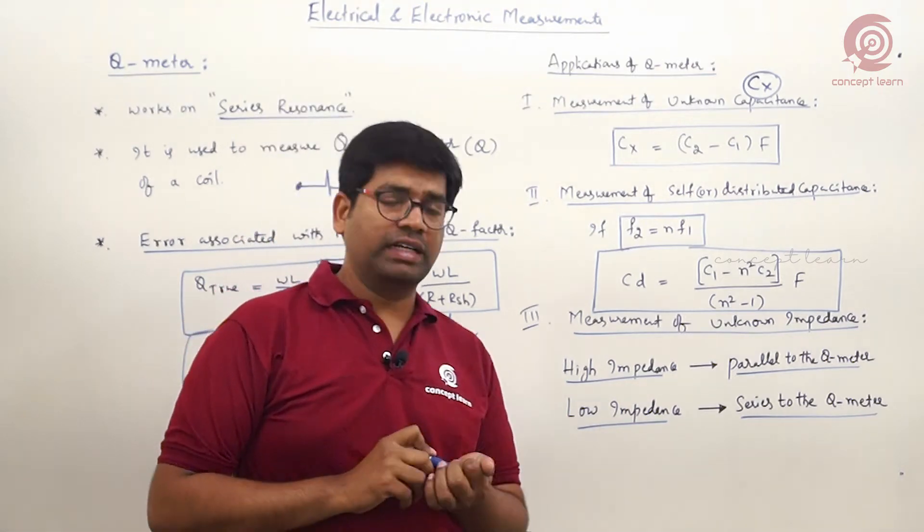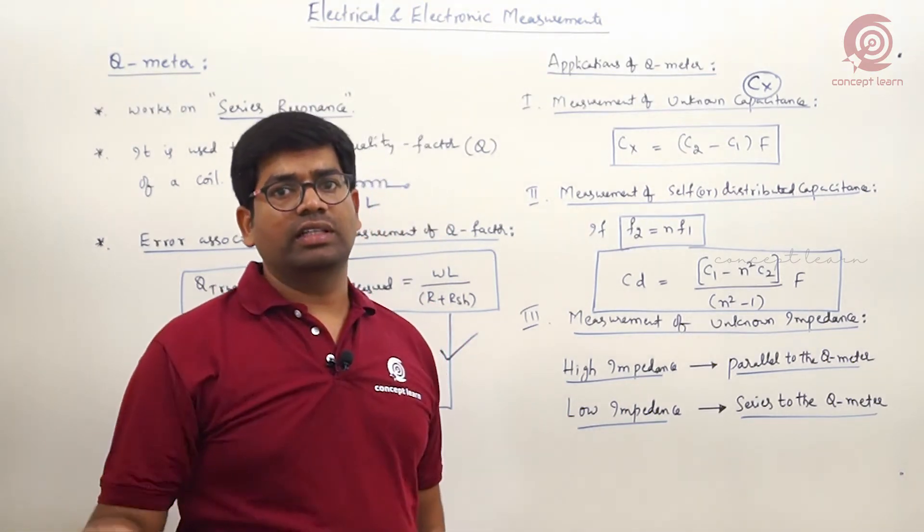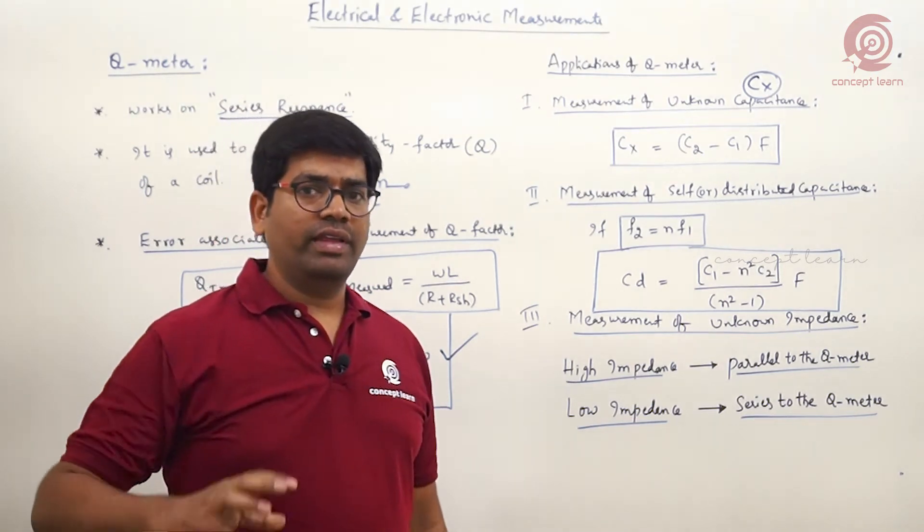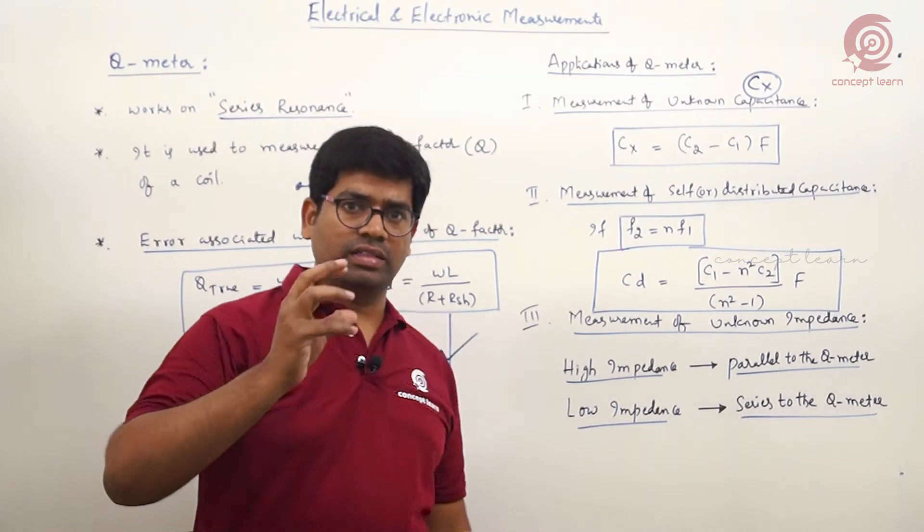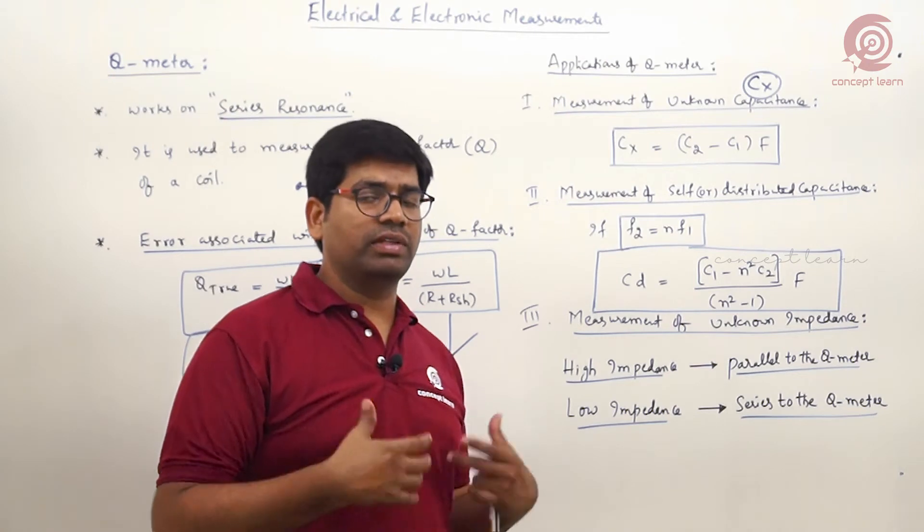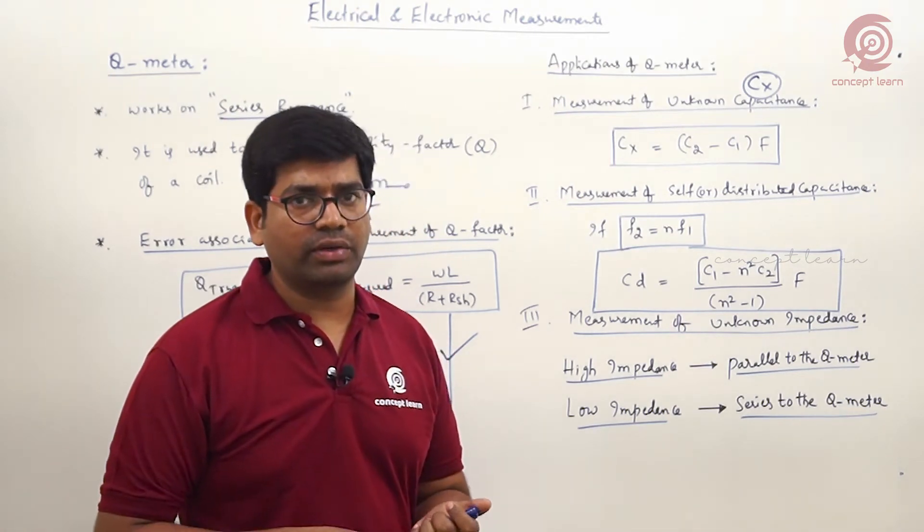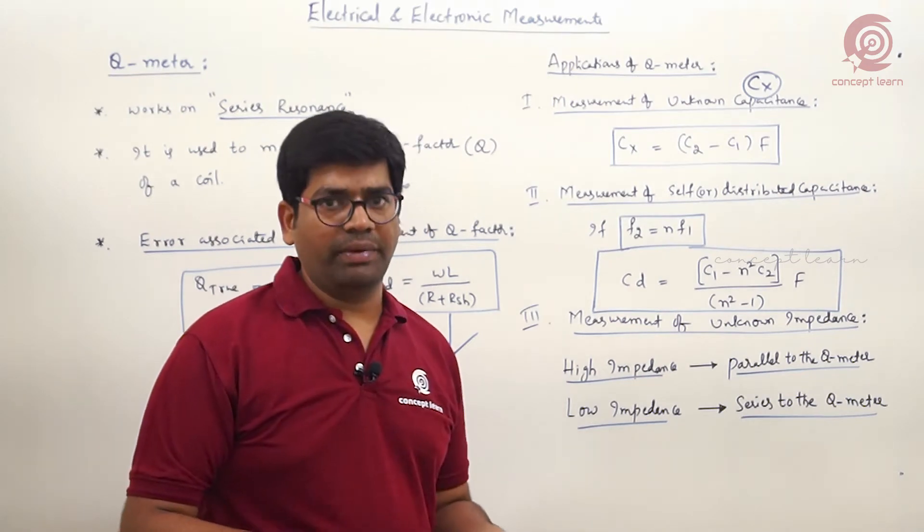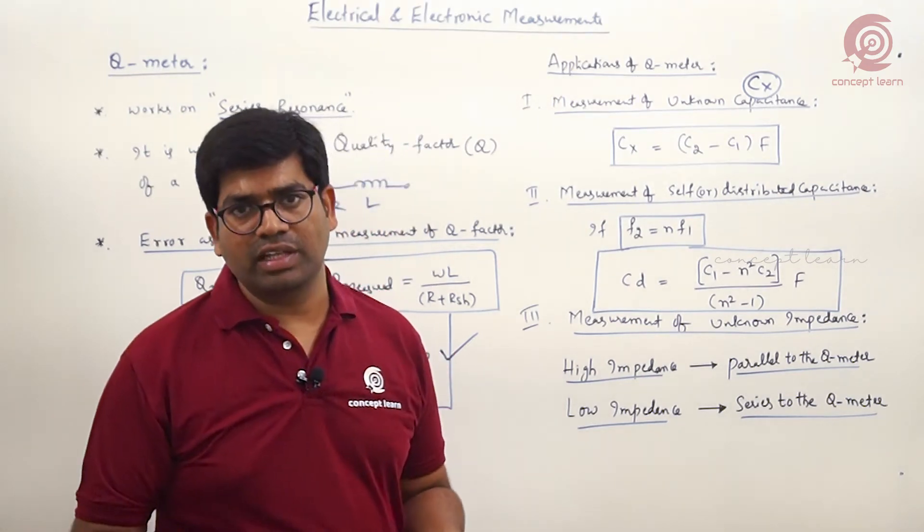Generally, how to recognize that question is for measuring unknown capacitance? They resonate the circuit at the same frequency and they change the capacitance value, that is the known capacitance value in the circuit. Then just the coil capacitance or unknown capacitance we need to find.